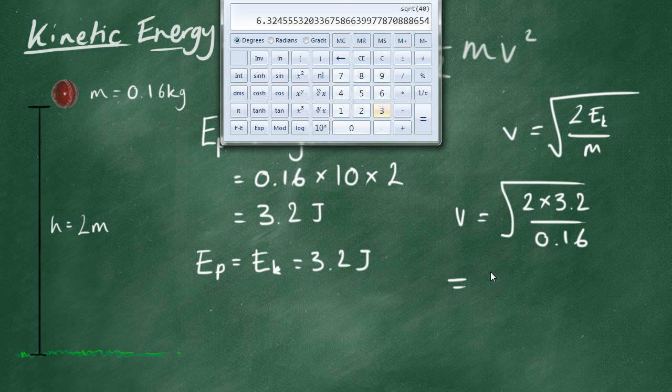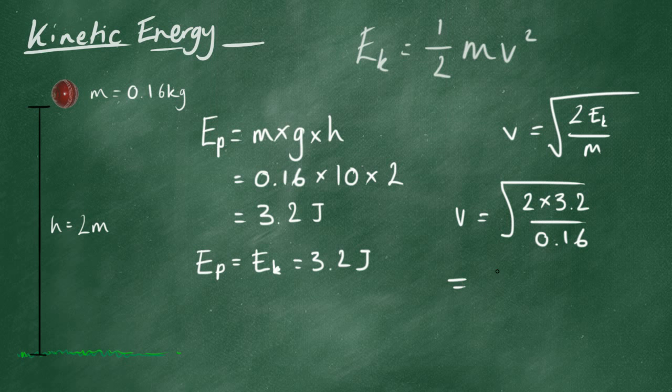So, the speed, v, is 6.32. Okay, to three significant figures. And the unit, meters per second.